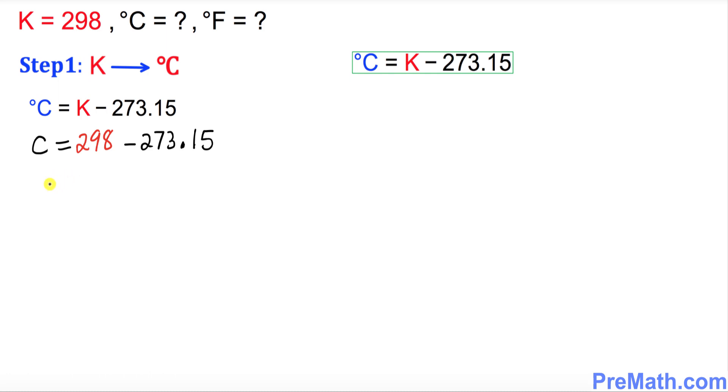When you simplify this, C is going to be 24.85 degrees, and if you simply round it up, C is approximately equal to 25 degrees.